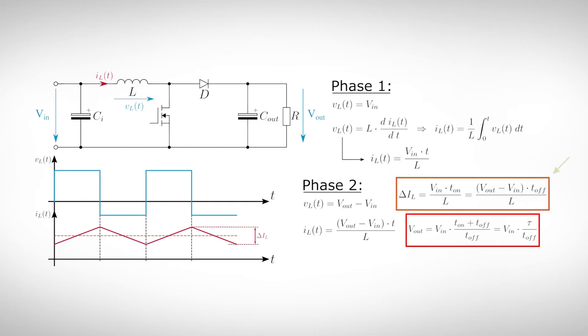The current through the inductor rises and falls around the average current, generating a ripple. Again, we get the formula for the ripple current and the formula for the output voltage. Theoretically, the output voltage can become as high as we want, but due to losses and finite switching times, there is of course a practical limit.